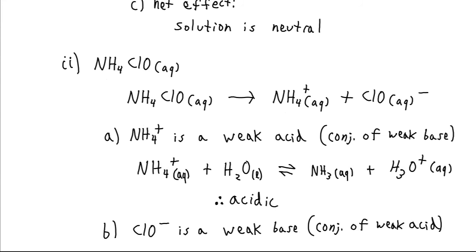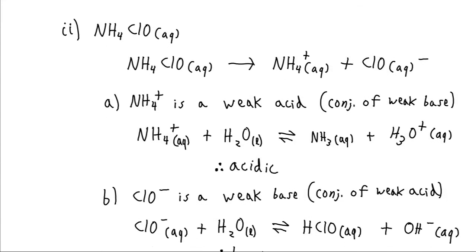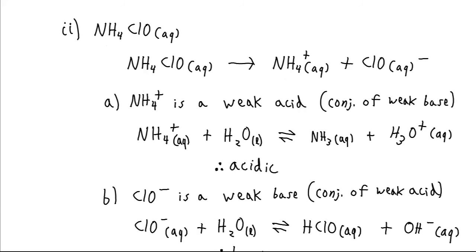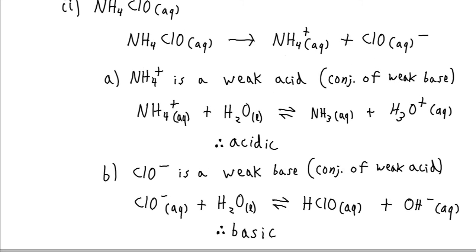ClO-minus is a weak base. It's the conjugate of our hypochlorous acid. And so this is going to be basic. It's going to take a proton from the water and increase the OH-minus in the solution. Well, this is in conflict. This is acidifying the solution. This is making it more basic. So what actually happens, in order to know that, we're going to have to compare the equilibrium constants for this acid and this base.